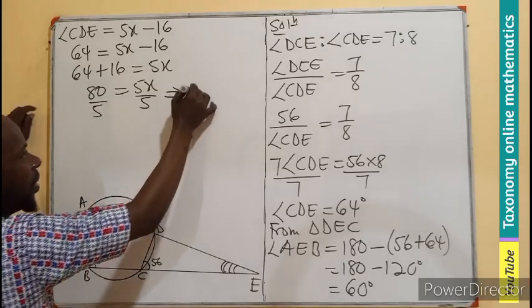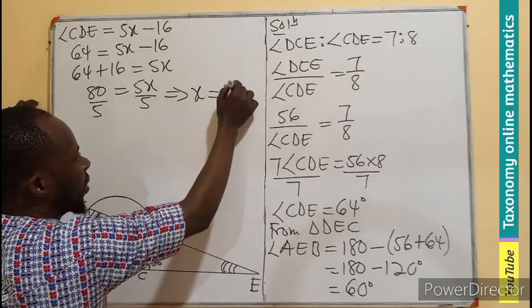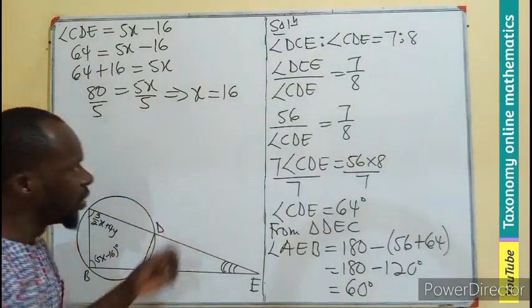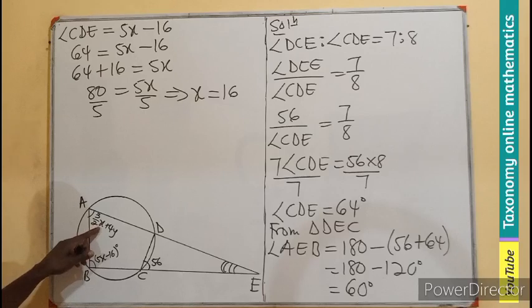If we add this, we are looking for x. So let's divide by the coefficient of x. And that simply means x will be equal to 16. So the value of x is known.